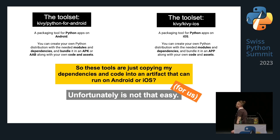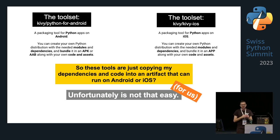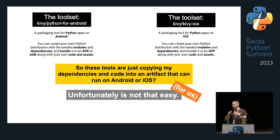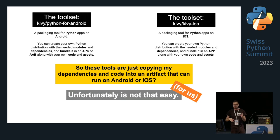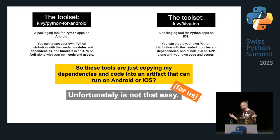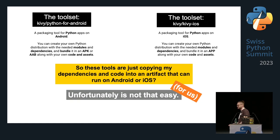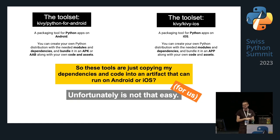For packaging, Python-for-Android and Kivy iOS are packaging tools. With both, you can create your own Python distribution with the needed modules and dependencies and bundle it into an app that can run on Android or iOS. But it's not as simple as just copying dependencies — so let's have an audience participation session.